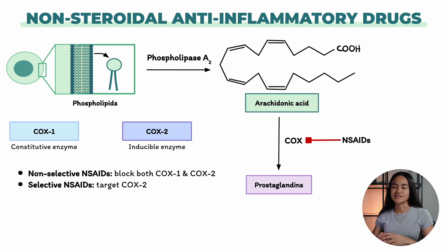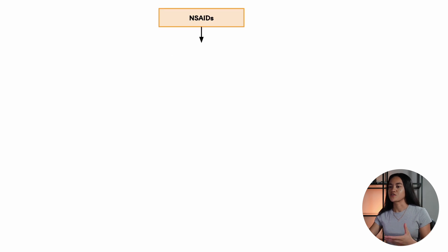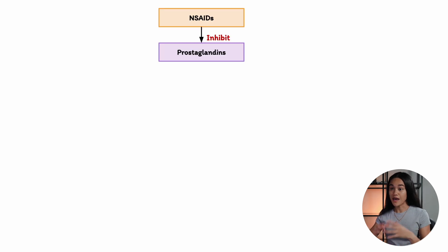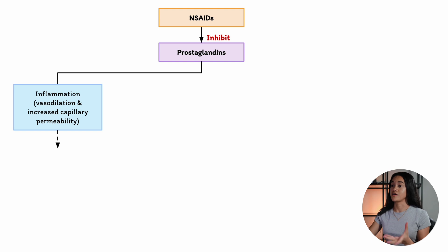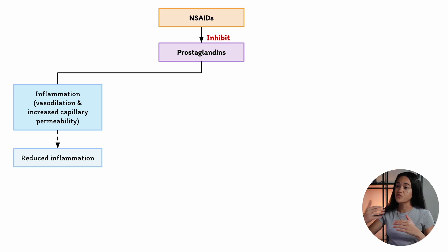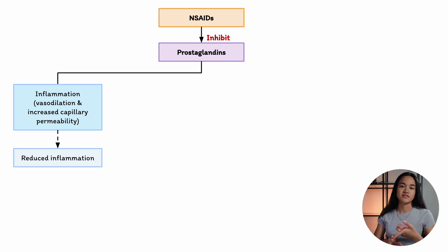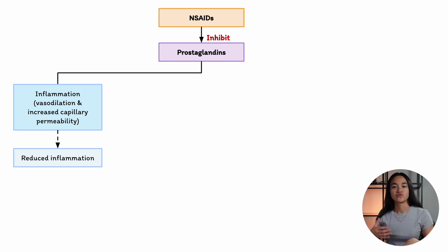Let's break down how NSAIDs work and their effects on the body. They block the production of prostaglandins, which are chemicals involved in inflammation, pain, and fever. First, in reducing inflammation: prostaglandins cause vasodilation — widening of blood vessels — which increases blood flow to injured areas, leading to redness and warmth. They also increase capillary permeability, leading to swelling. By inhibiting prostaglandins, NSAIDs help reduce redness, warmth, and swelling during acute inflammation.